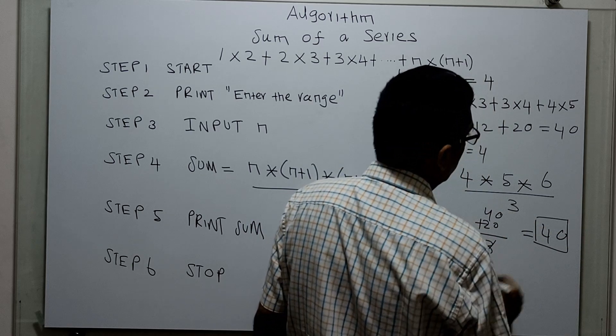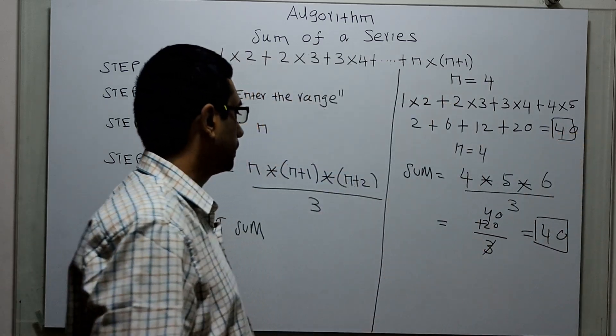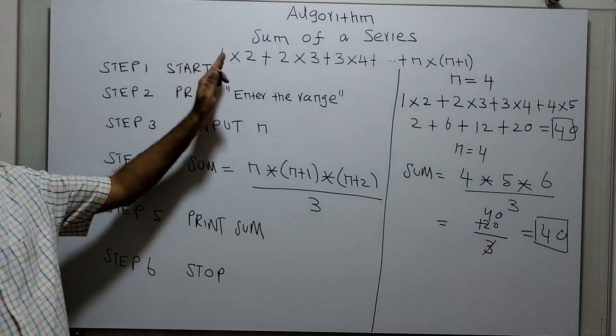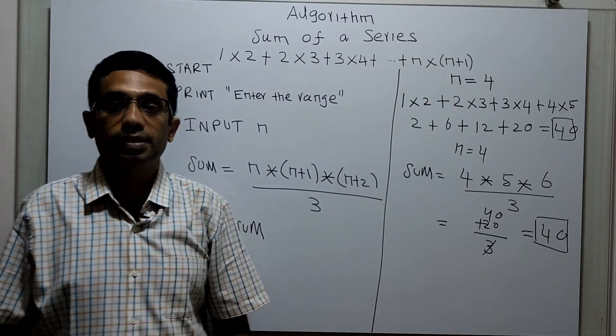My algorithm is producing 40. The expected value of the series is 40. By applying this formula, I am calculating the sum of the series which is given here. That's it.